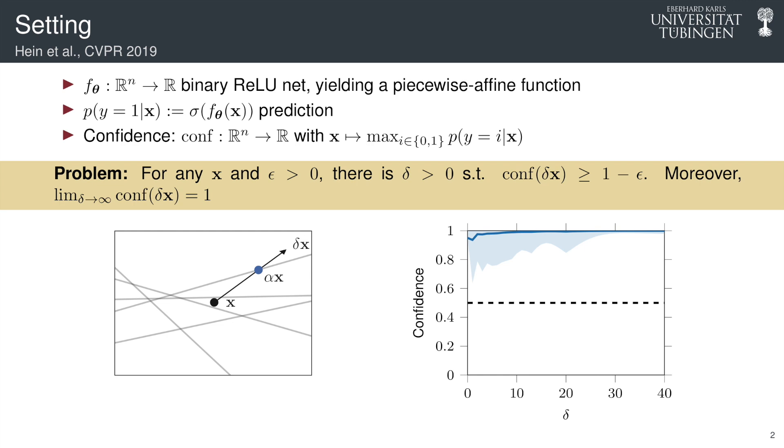Now, this is the problem. Let's focus on the left figure first. So you have an input space and have a linear region. That is the domain of the piecewise affine function.